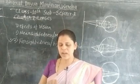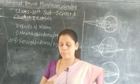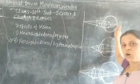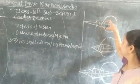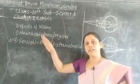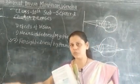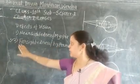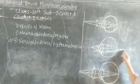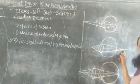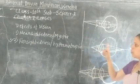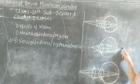The near point has shifted further away. In normal vision, the image formed by the lens falls on the retina. But in the case of farsightedness, the image forms behind the retina. In myopia or nearsightedness, the image forms in front of the retina, but in farsightedness the image forms behind the retina, as shown in the figure.